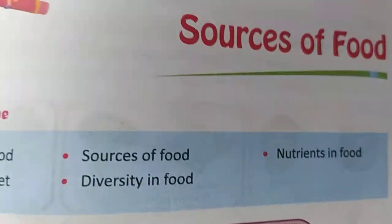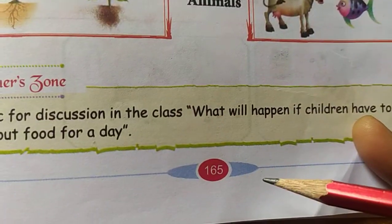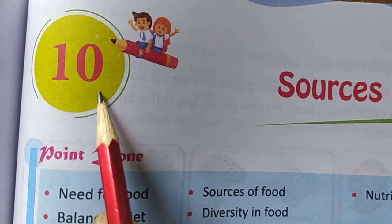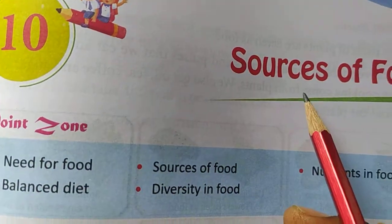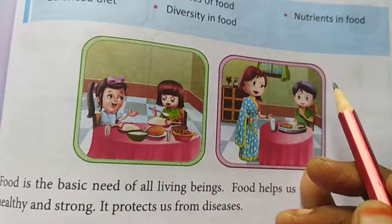Hi children, good morning. Third class EBS page number 165. Our 10th lesson is about the sources of food.